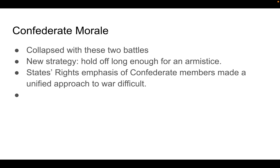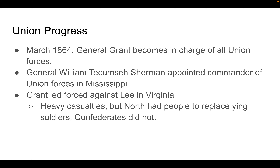This caused Confederate morale to collapse. Their new strategy was simply to hold off long enough for an armistice or ceasefire. But the Union continued to progress. In March 1864, Lincoln appointed General Ulysses S. Grant as head of the entire Union Army, not just the Western armies.